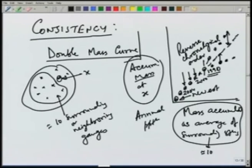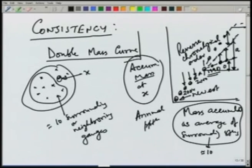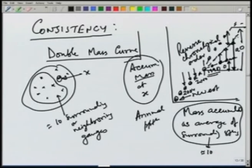Either the station was moved or the environment around the station was changed, and therefore we need to correct the earlier data and bring it in line with the recent data. There is a correction factor which has to be applied to all data before 1990 — the correction factor depends on the value A, which is the actual straight line value, and the observed value O. All the data values have to be multiplied by A/O to bring them to the straight line. This way we can correct any inconsistency in the data.